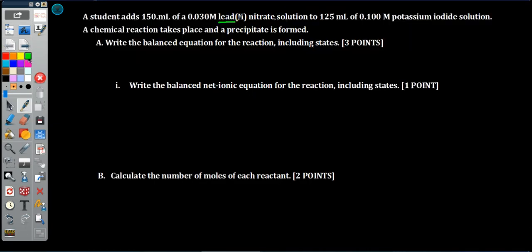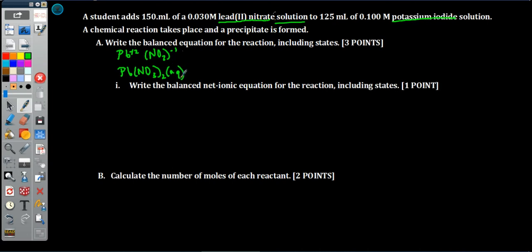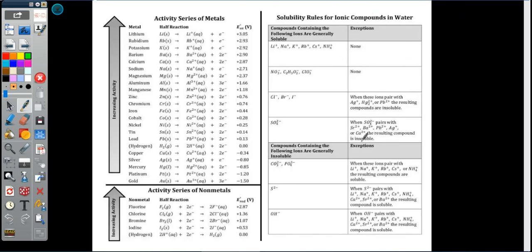Our two reactants are lead(II) nitrate and potassium iodide. I'm going to write the formulas first and then worry about balancing. Lead(II) means the lead ion has a plus-two charge. Nitrate — NO₃ with a minus-one charge — we don't have to memorize that, it's on our list of polyatomic ions. When those come together it's Pb(NO₃)₂. It's a solution, so it's aqueous. Anything with nitrate is very soluble.